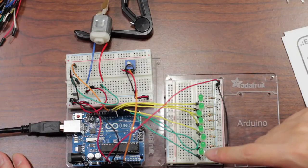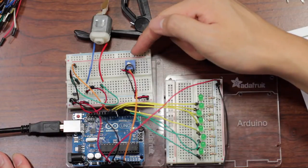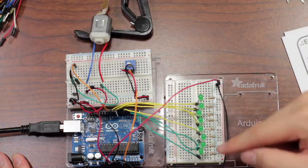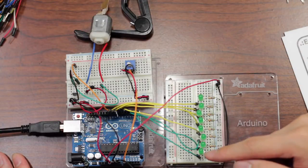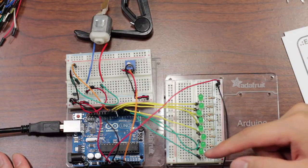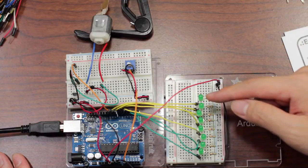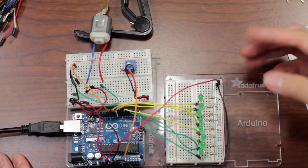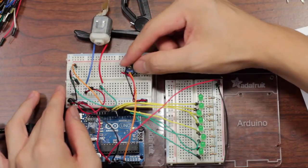So every 125 in terms of value for the potentiometer, every time it would increase by 125, one of these would light up. So eventually by the time it's at 100%, this light should be on and the rest of them are on as well. So let's see exactly how this works.